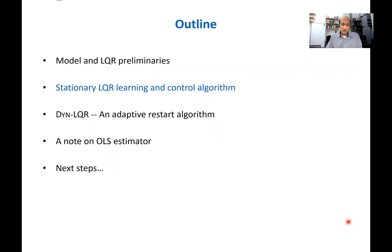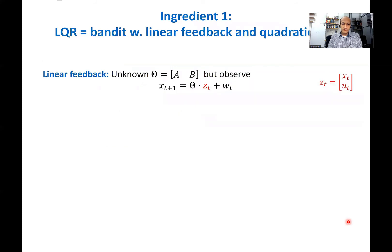Next, I want to quickly review some known results for learning and control of stationary LQR systems, because a few ingredients already known for stationary LQR are also useful for our work on non-stationary LQR. The first ingredient is that an LQR problem, if we forget the MDP part underlying it, is basically a bandit problem with linear feedback but quadratic cost. In the stationary problem where we don't know A and B, if we take some action Z_t — where Z_t is the state X_t and action U_t — what we observe is a linear inner product of our action and the unknown parameter theta_t, plus some noise: noisy linear feedback.